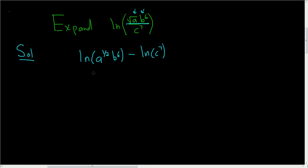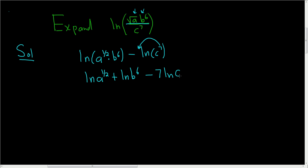So that was the quotient rule. Now we'll use the product rule. So this is the natural log of a to the 1 half plus the natural log of b to the 6th. Minus — and then here we can bring the 7 out front using the power rule — 7 natural log of c.